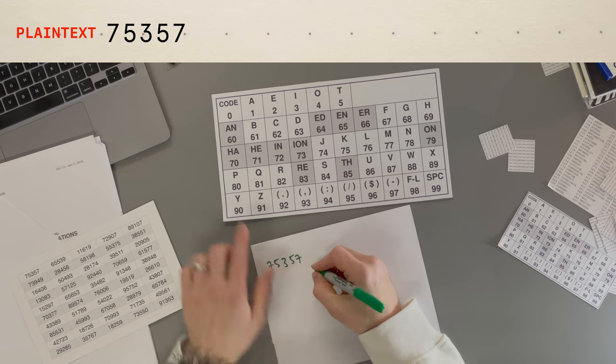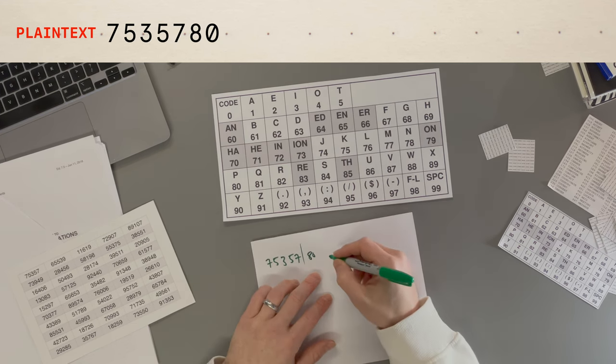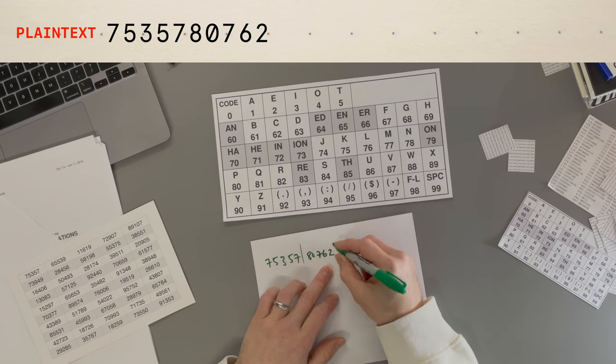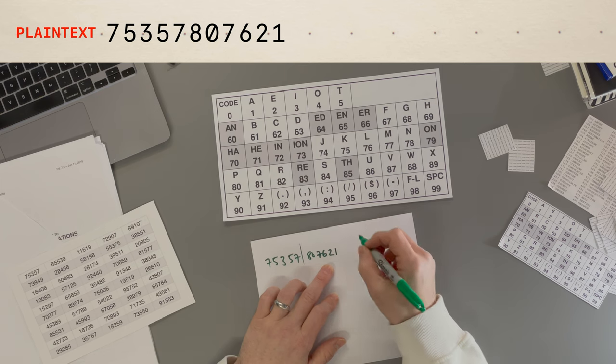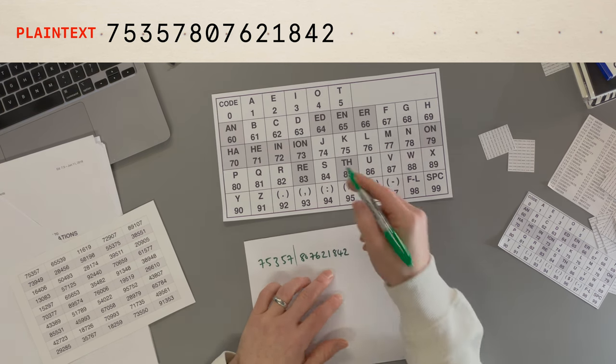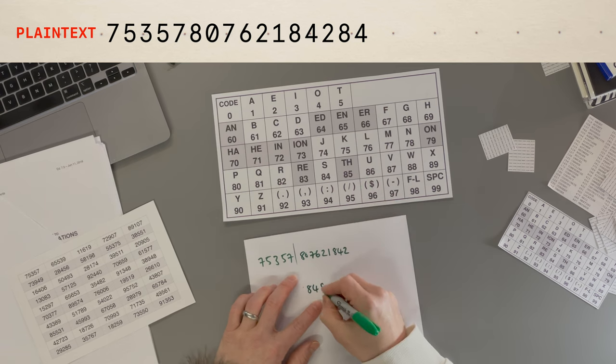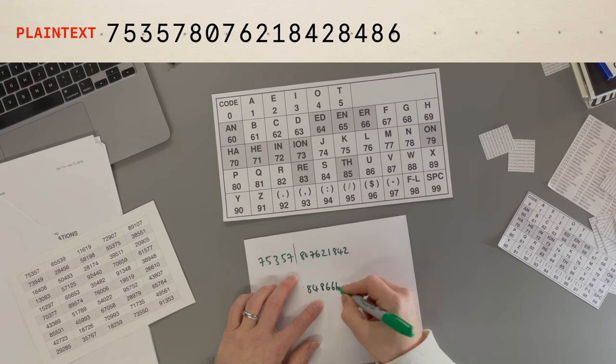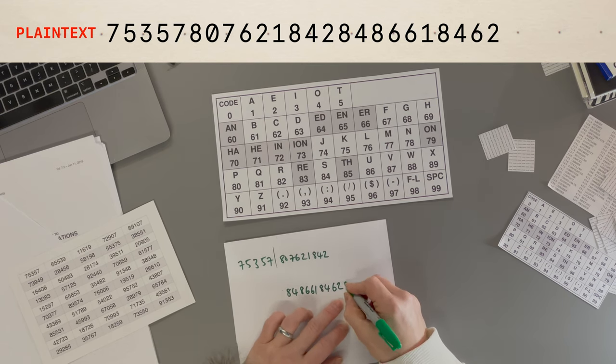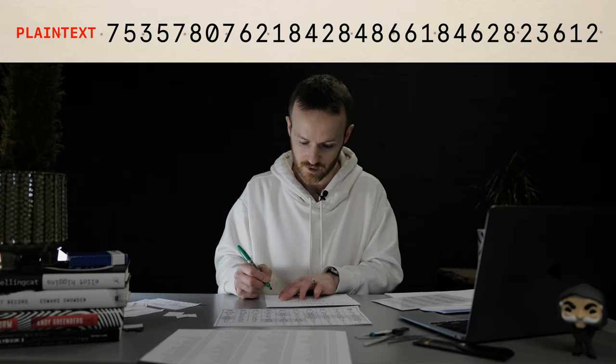So here's what we want to say. P is 80, L 76, E 2, A 1, S 84, back to E 2, S 84, U 86, B 61, S 84, C 62 or 82, I 3, B. It says 'please subscribe.'